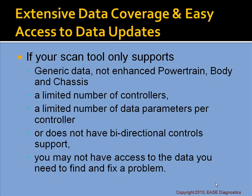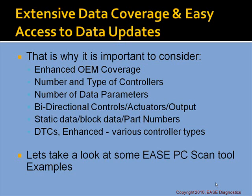The next power feature is extensive data coverage and easy access to data updates. If your scan tool only supports generic data and not enhanced powertrain, body, and chassis data, it only supports a limited number of controllers and data parameters per controller, or lacks bidirectional control support — you may not have access to the data you need. Important considerations include: what enhanced OEM coverage does the scan tool have, the number and type of controllers available, the number of data parameters per controller, what bidirectional control features and actuators are available, whether static data and part numbers are accessible, and whether you have enhanced DTCs on all controller types.